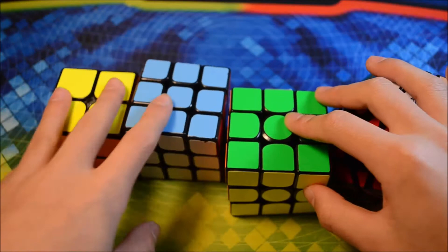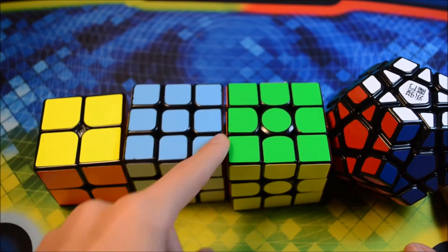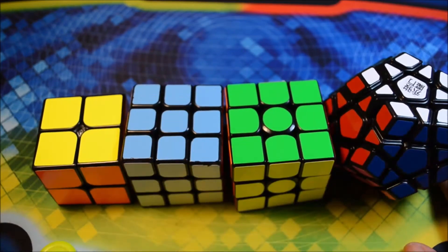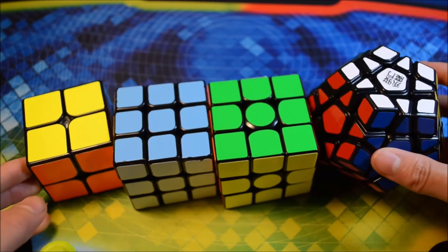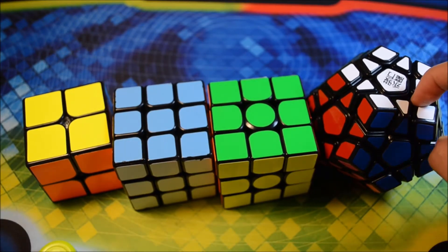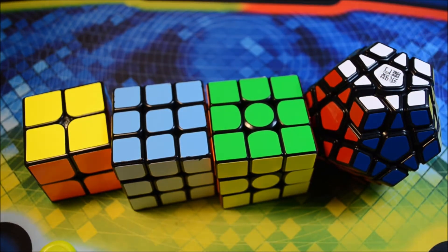There are six events at this competition. There's 2x2, 3x3, 3x3 OH, Mega Minx, Blind, and 5x5, and I'll be competing in every event except Blind and 5x5. So I will be doing Mega Minx the first time in forever, but that's besides the point.